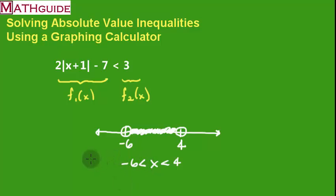So if I put it in set notation and say the answer is x, such that negative 6 is less than x, which is less than 4. Now, many people just write this on a test. They just say all the numbers greater than negative 6 and all the numbers that are less than 4. And there you have it. So that's how you use a graphing calculator to solve absolute value inequalities.